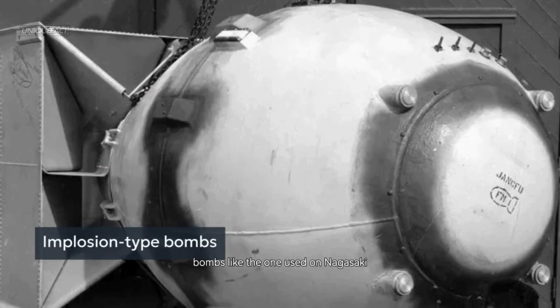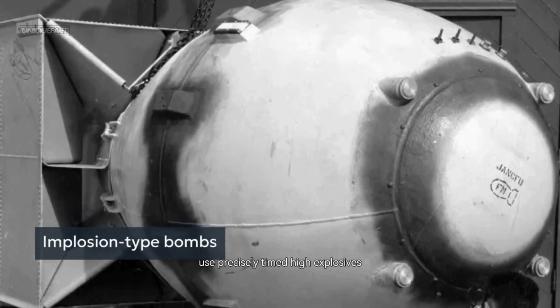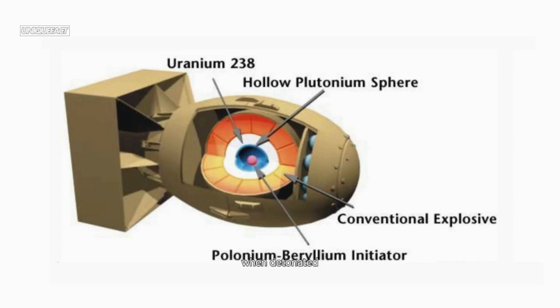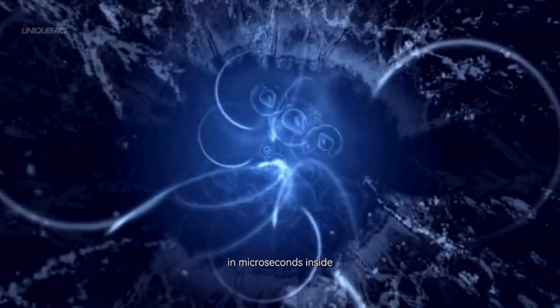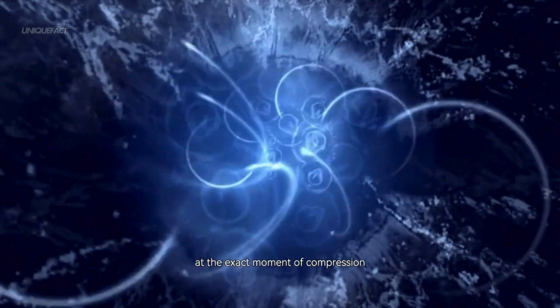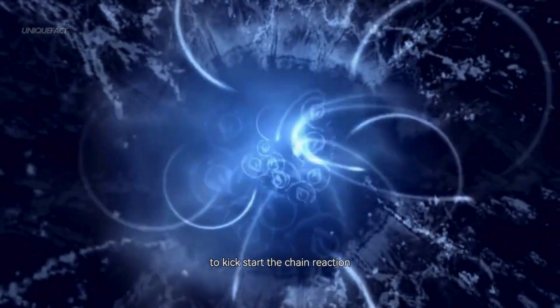Implosion bombs, like the one used on Nagasaki, use precisely timed high explosives surrounding the plutonium core. When detonated, these explosives compress the core inward, increasing its density and forcing it into a supercritical state in microseconds. Inside, a tiny device called an initiator may release a burst of neutrons at the exact moment of compression to kick-start the chain reaction.